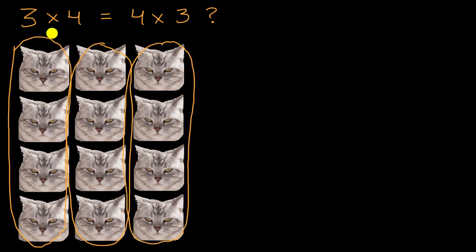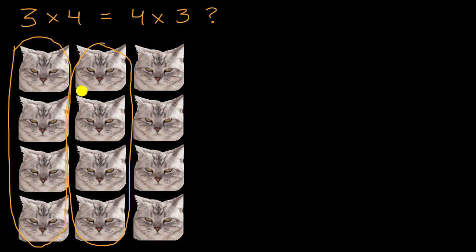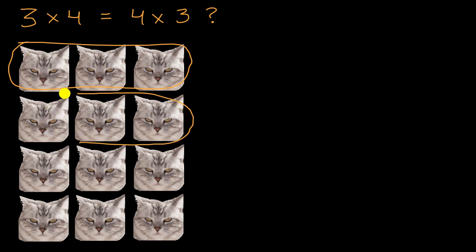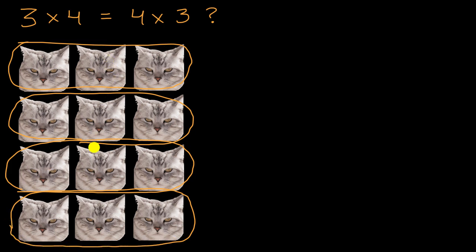If we view the first number here as groups of the second number, we could also view it as four groups of three. How would we do that? Well, we could have one group of three angry cats. We can have two groups of three angry cats. We can have three groups of three angry cats. And we can, of course, have four groups of three angry cats.